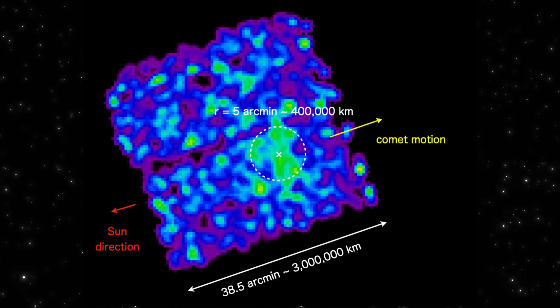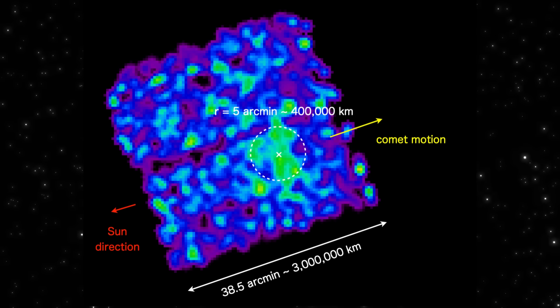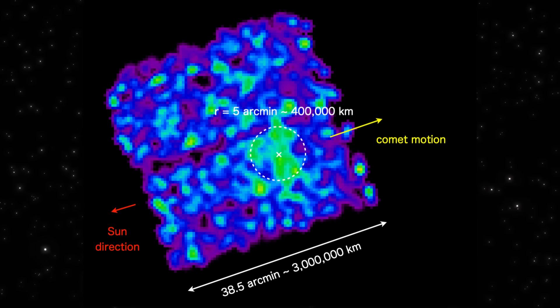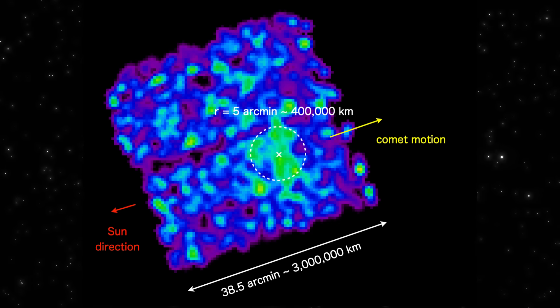This is XRISM's first X-ray image of three I-Atlas, and what it reveals shouldn't be possible. That bright core at the center is expected. Everything around it is not.